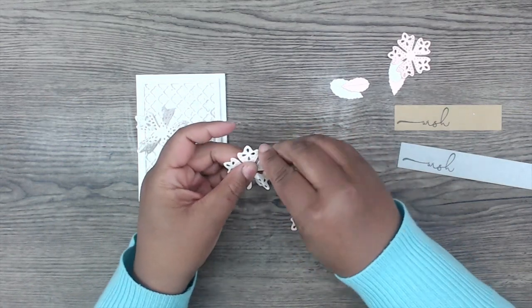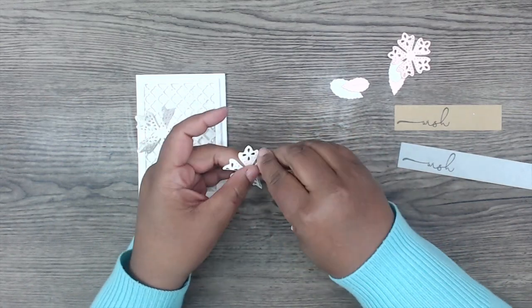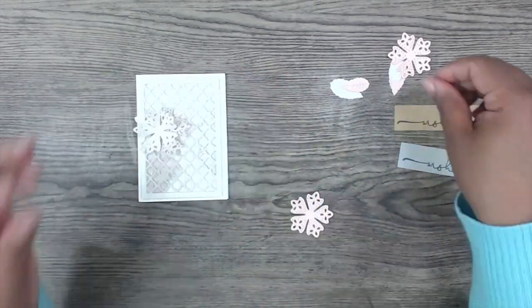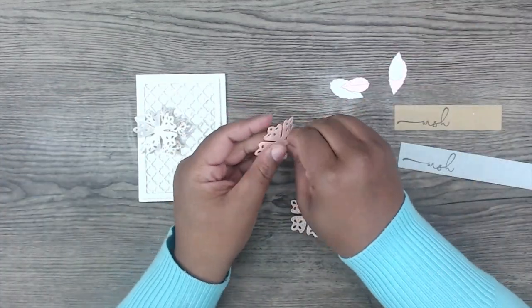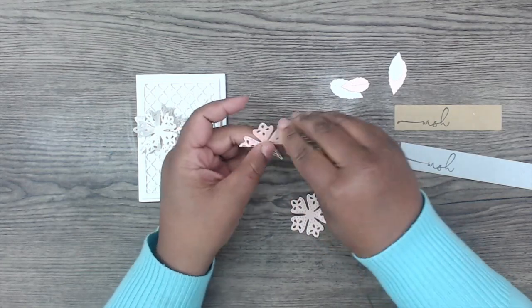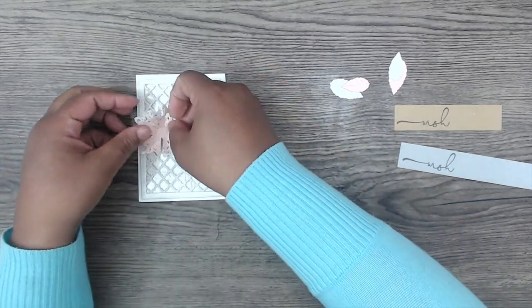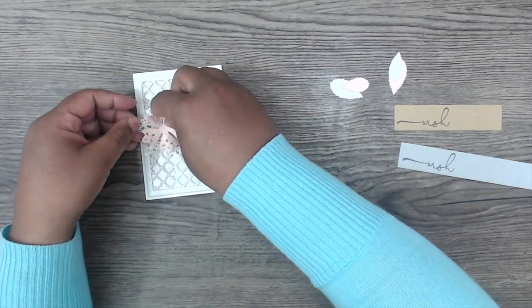So when you take the edge of the petal, just kind of pinch it together like a little tight squeeze and put it in the palm of your hand and push the center down. It creates just a soft curve to all of the flowers. So I cut one large flower in the Laced Flowers and three small flowers. And that just makes them match with some cardstock colors.